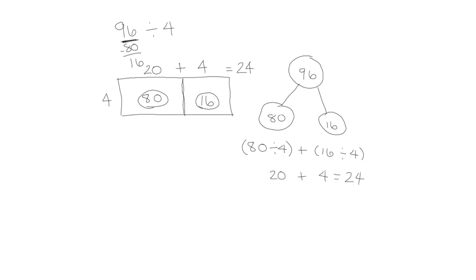I can check this with multiplication: 24 times 4. 4 times 4 is 16, 2 times 4 is 8, plus 1 is 9, and I'm back to my original number.